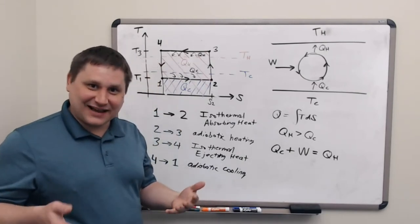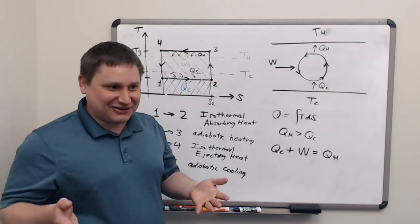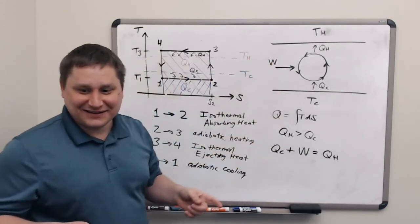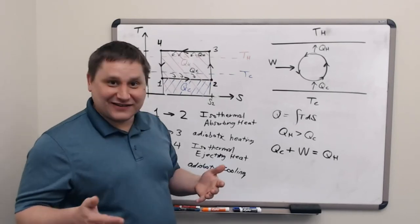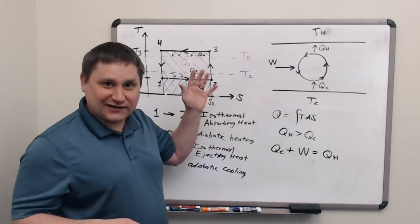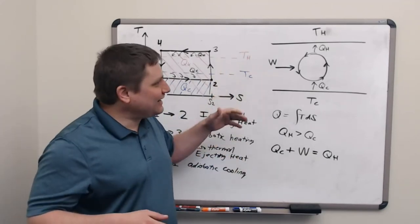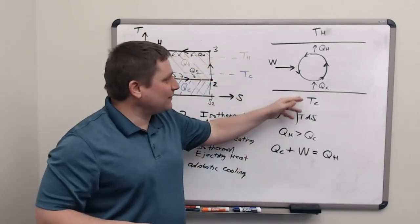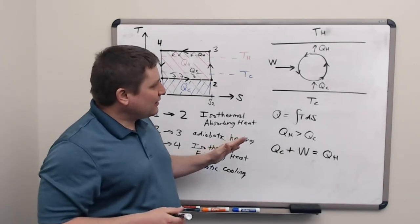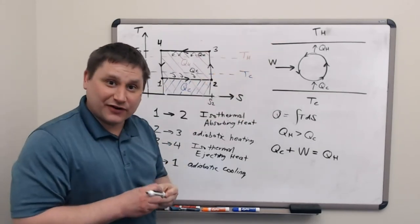And that seems to violate the second law of thermodynamics, because heat is only supposed to flow from hot to cold. And here it's going from cold to hot. But the reason that it doesn't actually violate the second law is that this cycle requires work input. So somewhere else in the universe, something else has to happen to produce that work that can go into here and kind of induce the flow of heat from cold to hot.